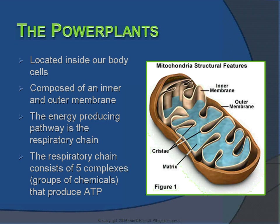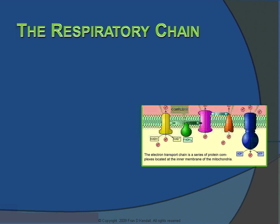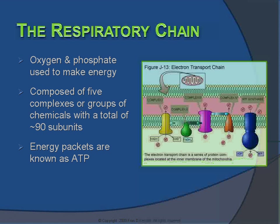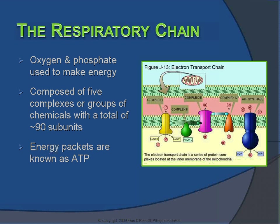All of our food is ultimately broken down into these energy-containing packets, or ATP. Oxygen and phosphate come together to assist the body in making energy. The five complexes, or groups of chemicals within the respiratory chain, consist of approximately 90 subunits, or pieces. They all come together like pieces in a jigsaw puzzle, and the energy packets generated through this process are known as ATP.